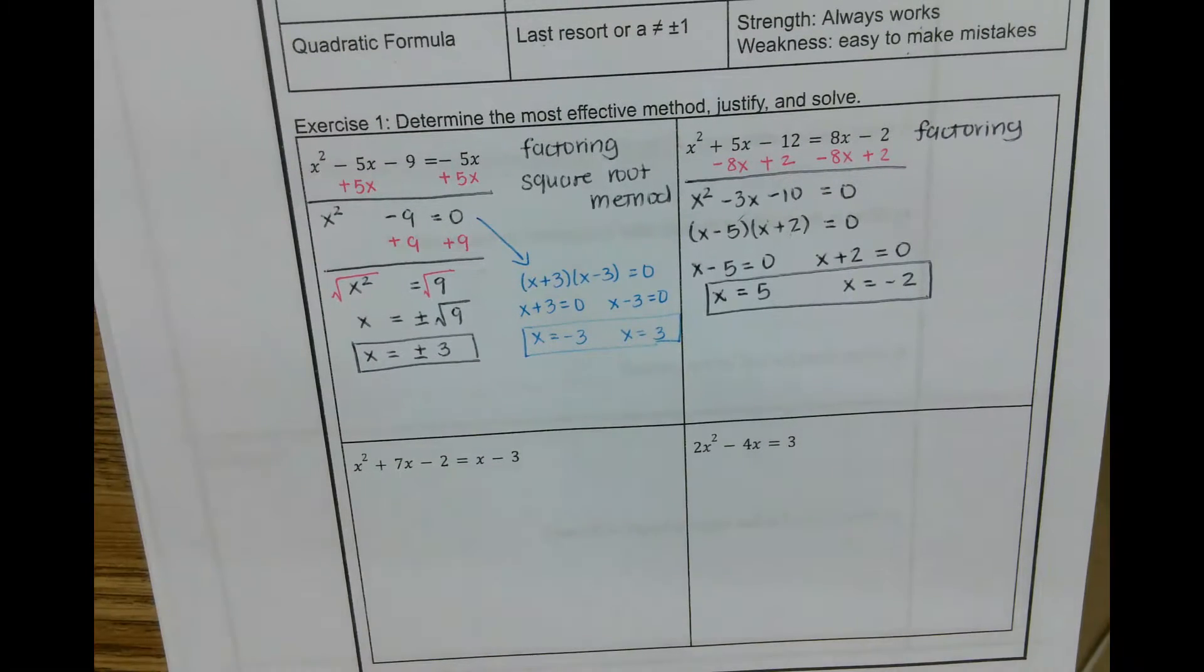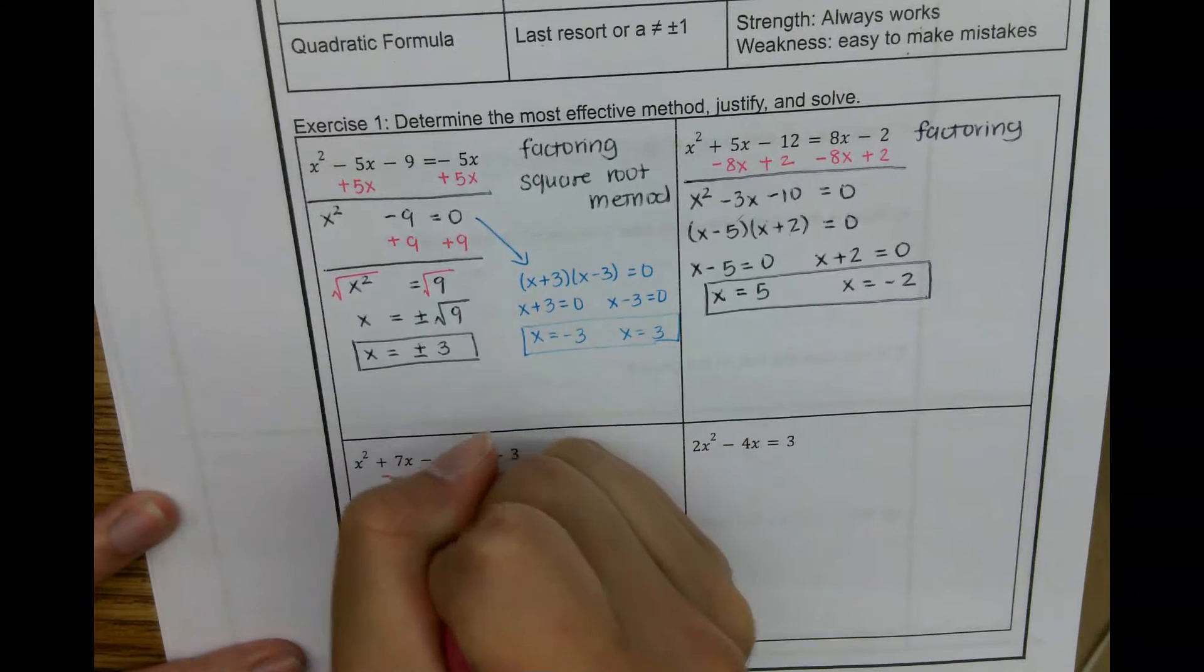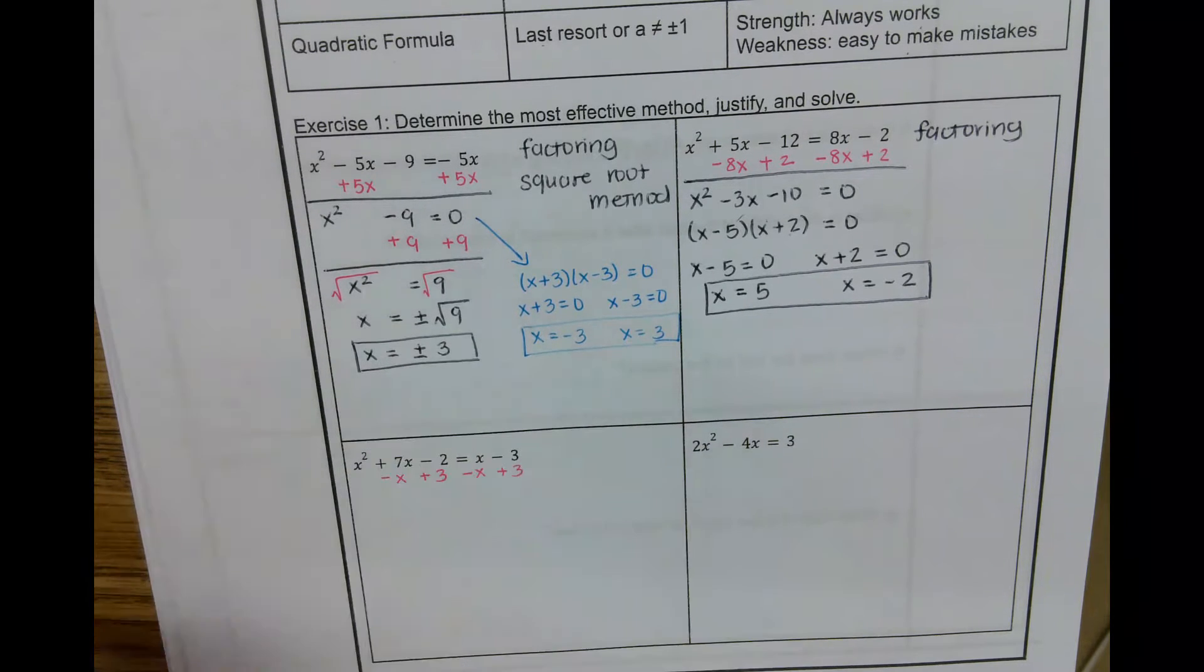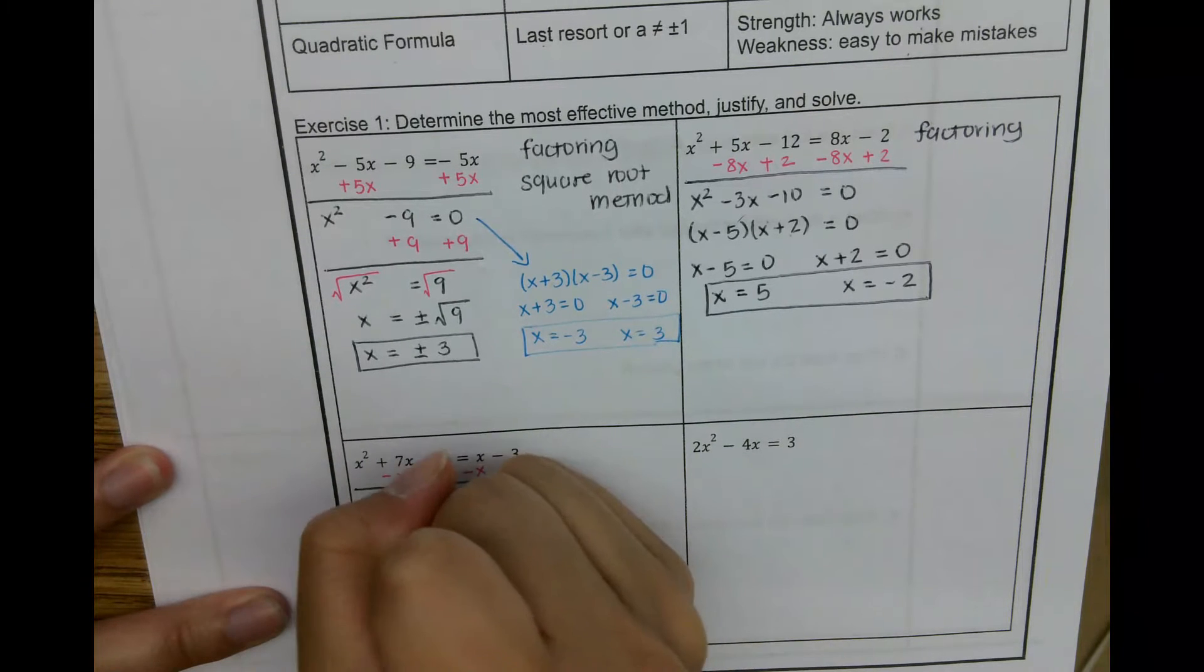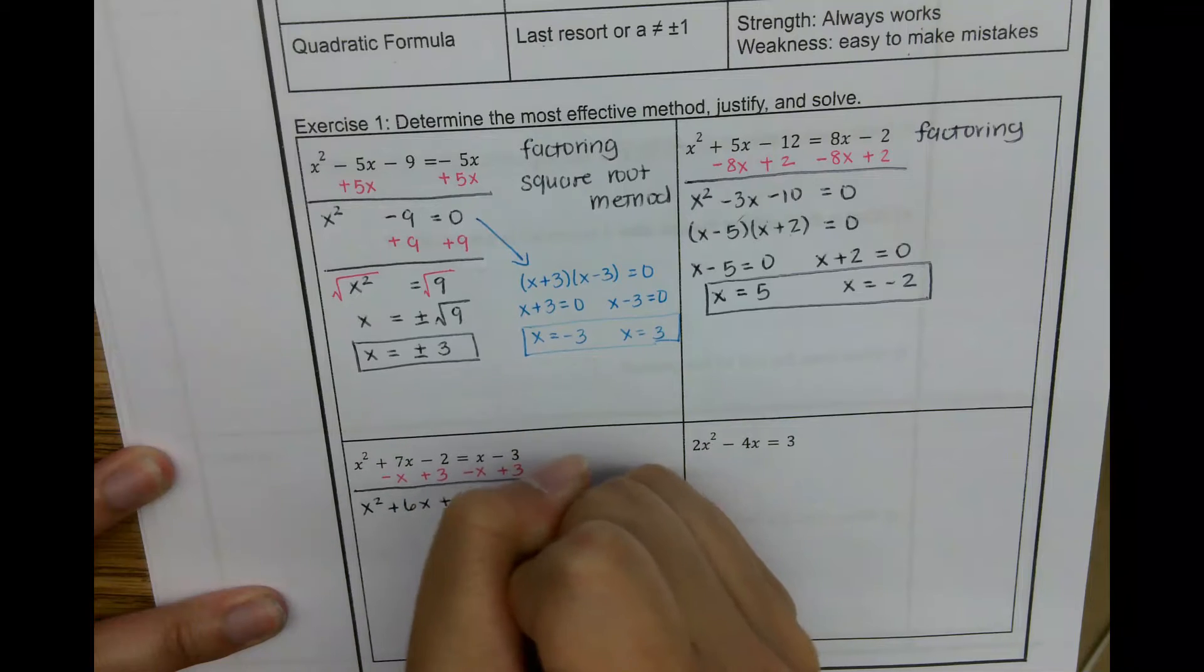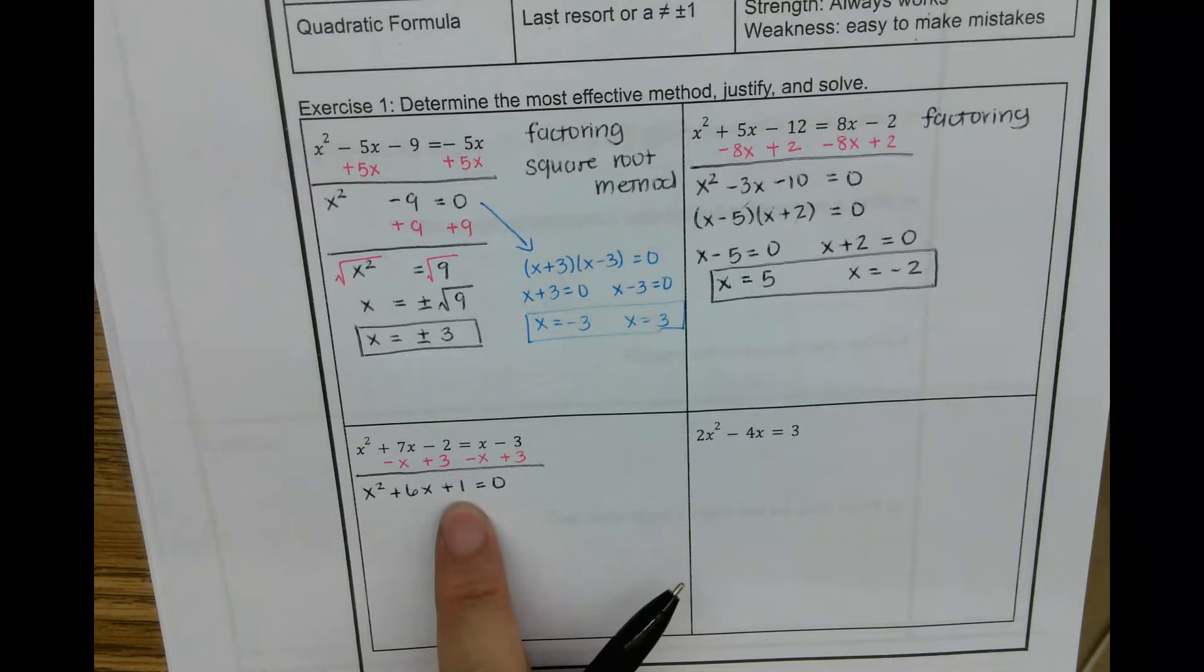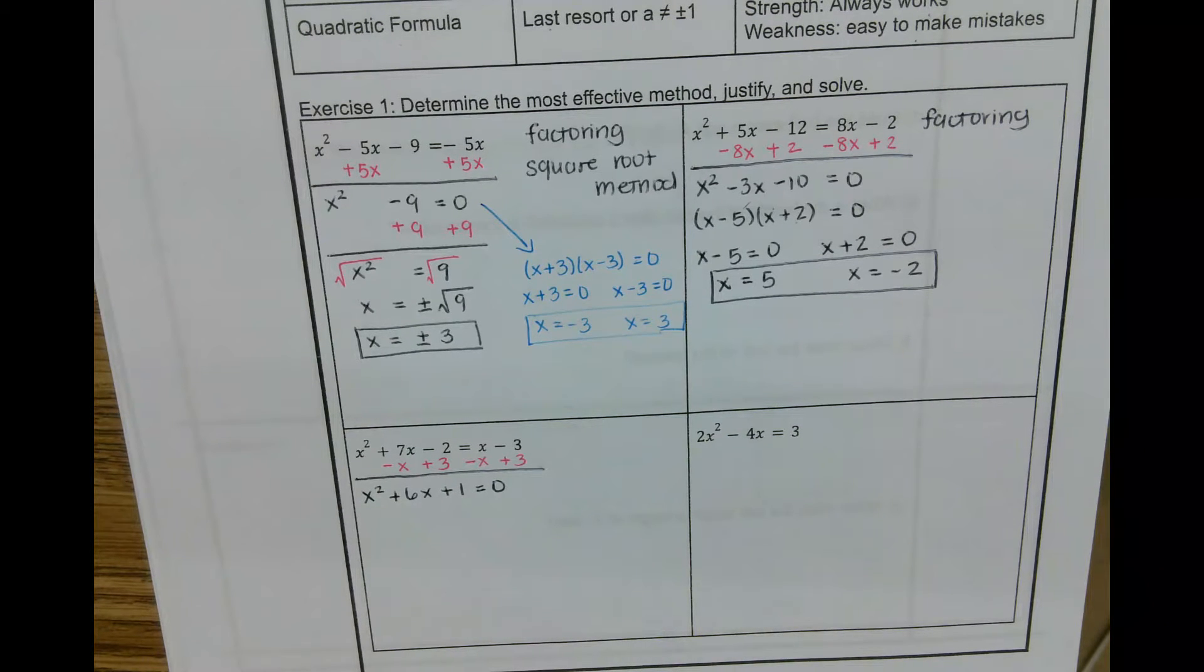Next one here, I'm going to move everything to the same side. So subtract x, add 3. x squared plus 6x plus 1 equals 0. So I already know this can't be factored because nothing multiplies to 1 but adds up to 6 because 1 times 1 is 1, 1 plus 1 is 2. So it doesn't give me that 6. So not factorable. However, I see that this b is even and a is 1. What I'm going to do is I'm going to complete that square.